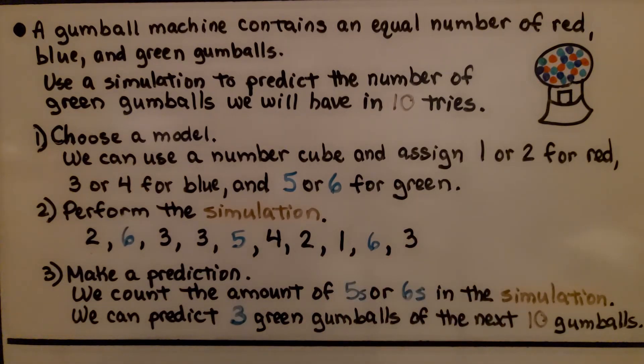We perform the simulation, and we roll the number cube, and this is the result that we get. We get a six, a five, and a six, that's three. So when we make our prediction, counting the number of fives or sixes in the simulation, we can predict three green gumballs of the next ten gumballs that come out of the machine.